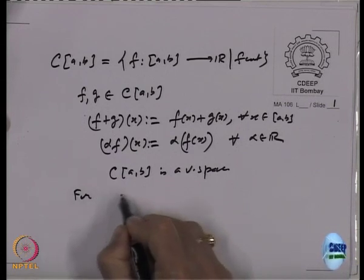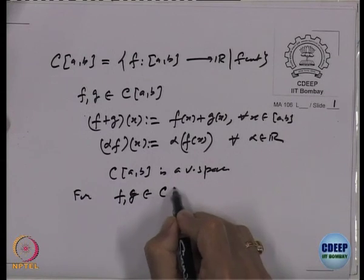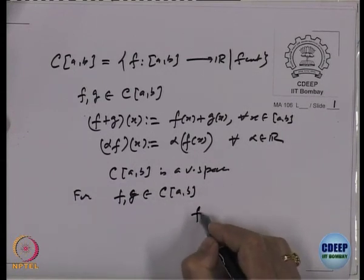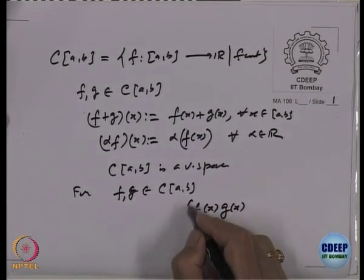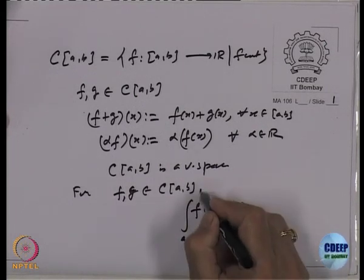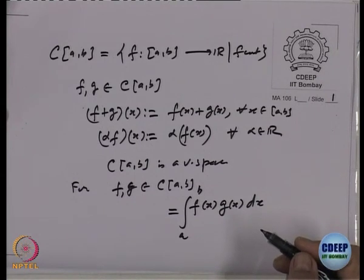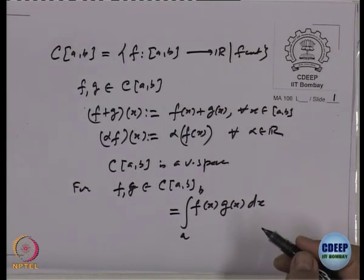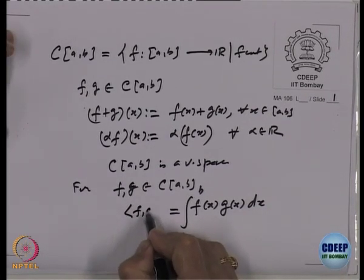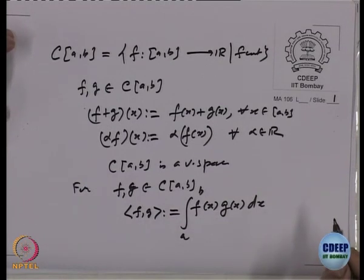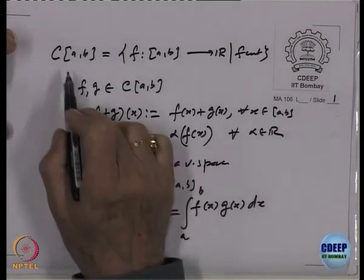For two continuous functions f and g in C[A,B], define their inner product as ⟨f, g⟩ = ∫ₐᵇ f(x)g(x) dx. This integral is well-defined since the product of continuous functions is integrable. This is the definition of the dot product for the vector space C[A,B].